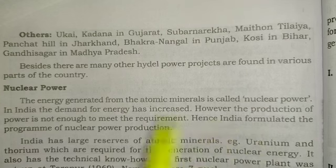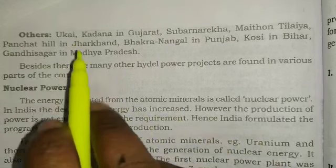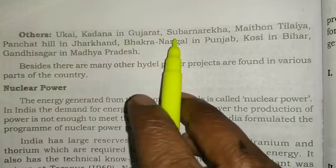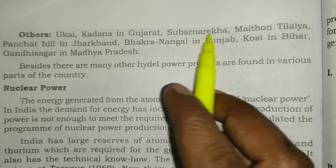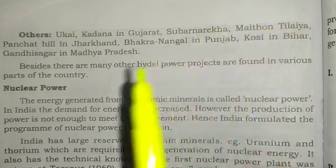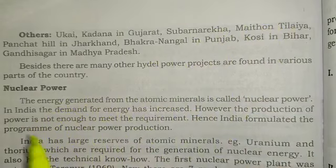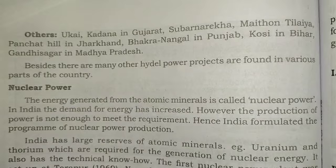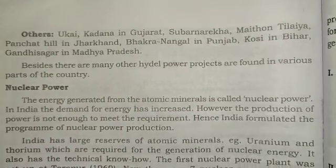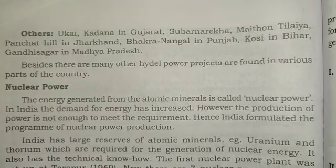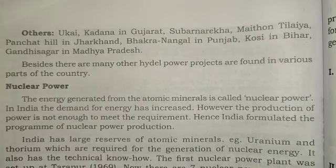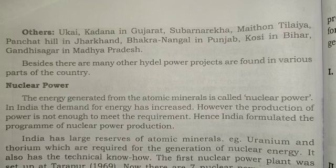Other important hydroelectric stations include: Ukai and Kadana in Gujarat; Tilaiya and Panchet in Jharkhand; Bhakra Nangal in Punjab; Ghosi in Bihar; and Gandhi Sagar in Madhya Pradesh. Besides these, there are many other hydropower stations found in various parts of the country.